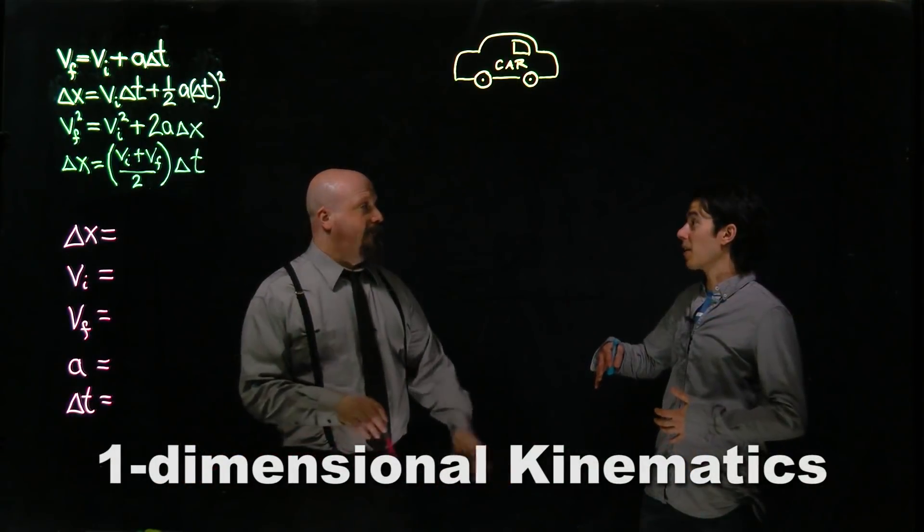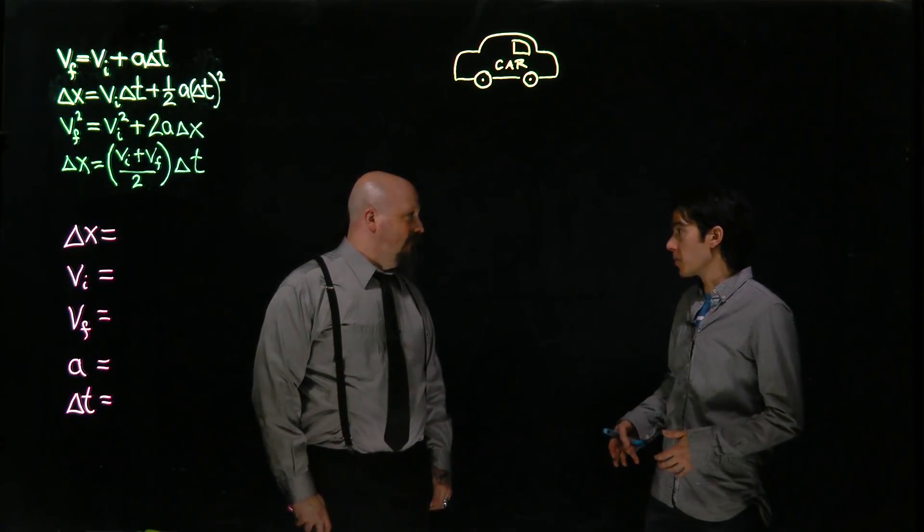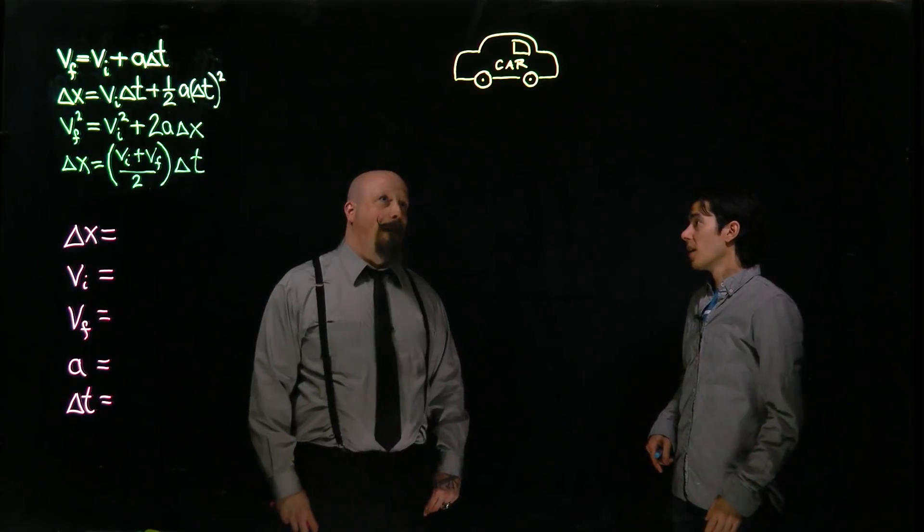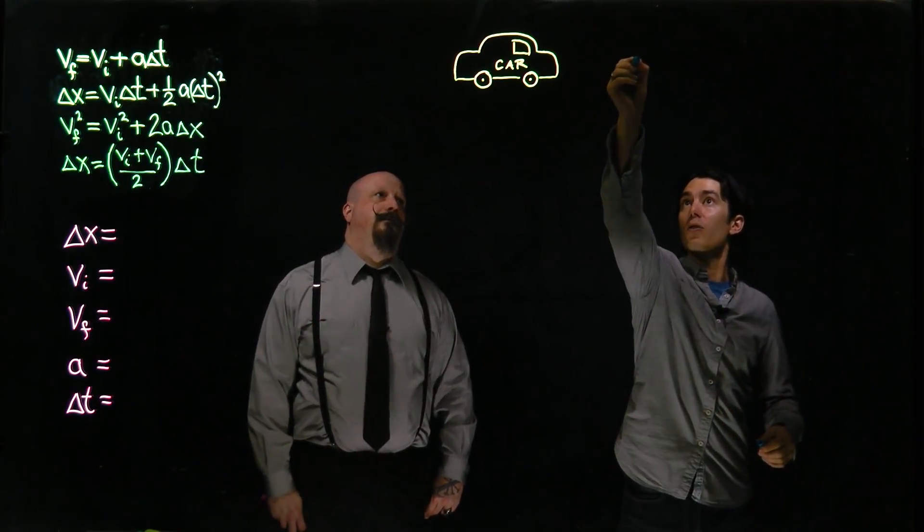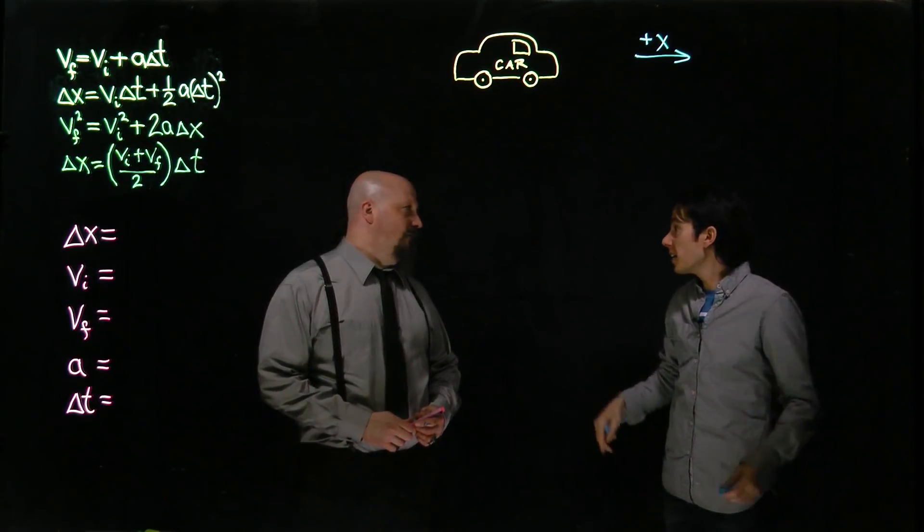The human body can handle accelerations up to 25 Gs, 25 times 9.8 meters per second squared. So let's take a look at a car crash. Say you're driving along in a certain direction. Let's define the positive x direction here at 90 kilometers an hour.